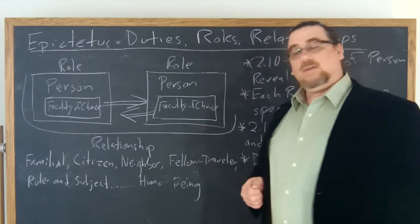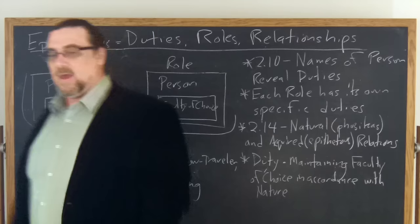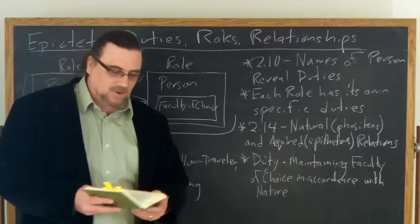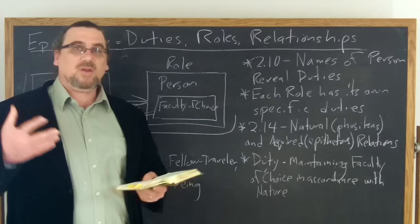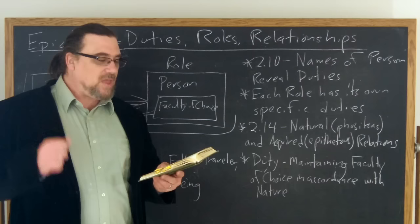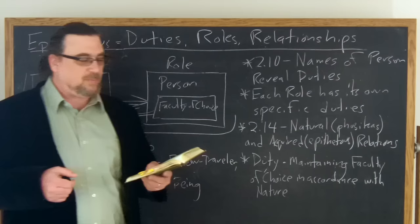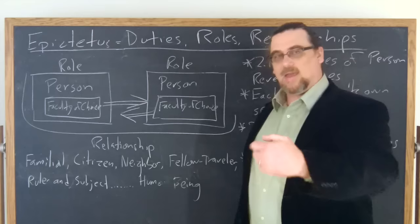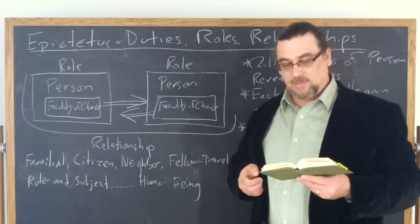So each of these roles has its own specific duties, and he gives you some examples in chapter 10 of book 2, but he's going to bring these up over and over again. The most general one, he says, you're to begin with a human being. That is, one who has no quality more sovereign than moral choice, but keeps everything else subordinate to it in this moral choice itself, free from slavery and subjection. So if you understand yourself in that way, that tells you, well, you ought to then behave in this way and not behave in that way, and you ought to behave towards other human beings in a similar way. He says, you're separated from wild beasts, you're separated from sheep.